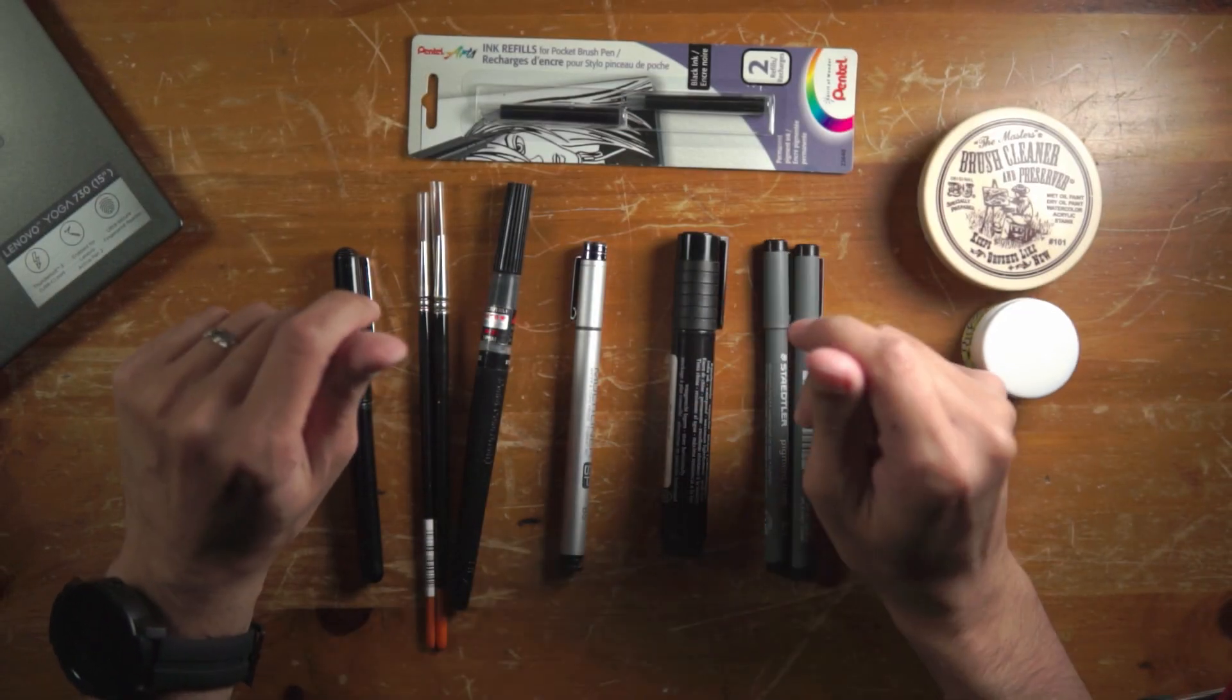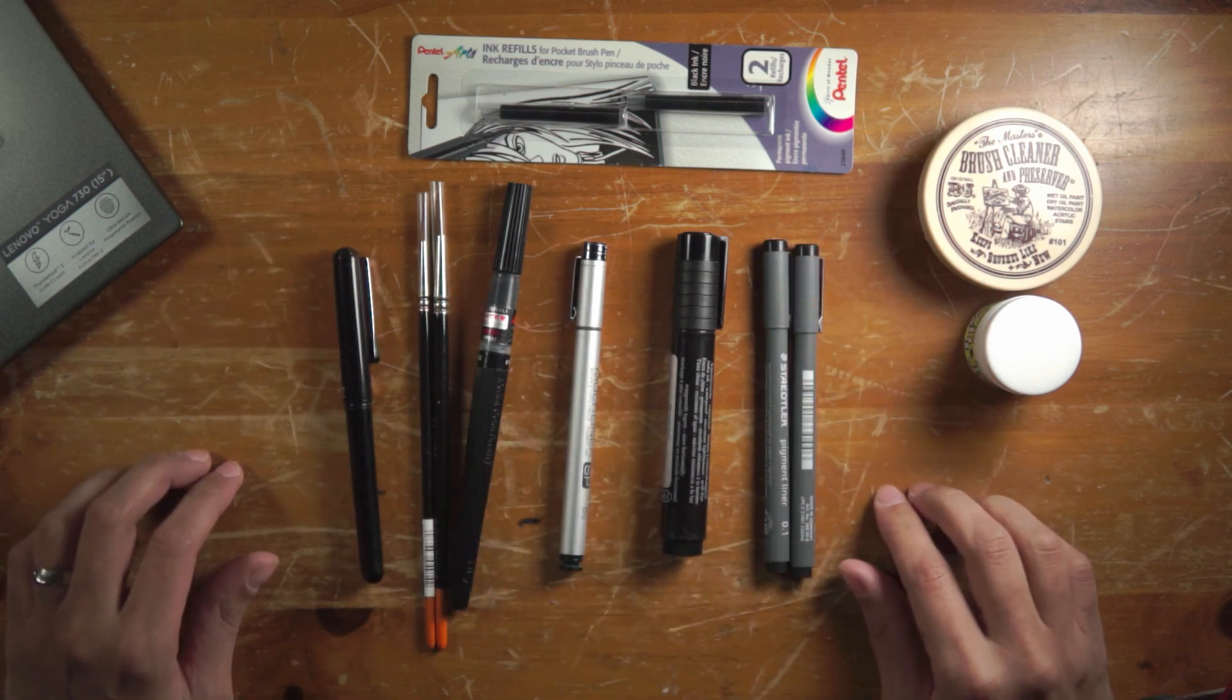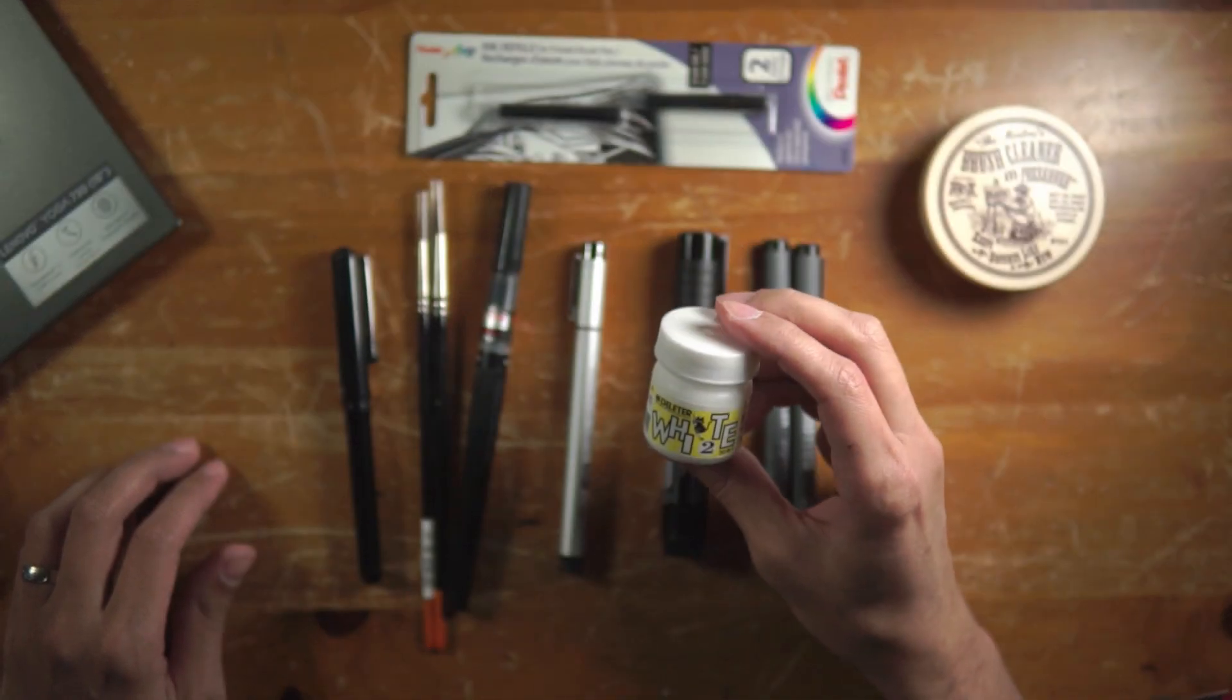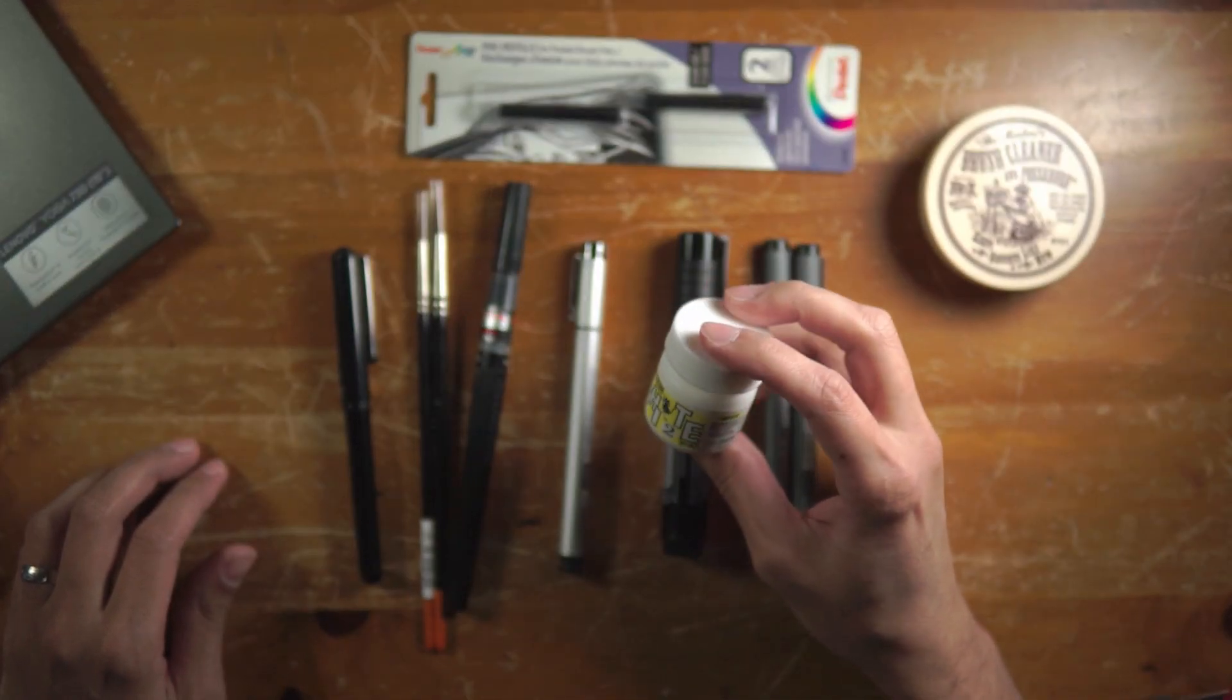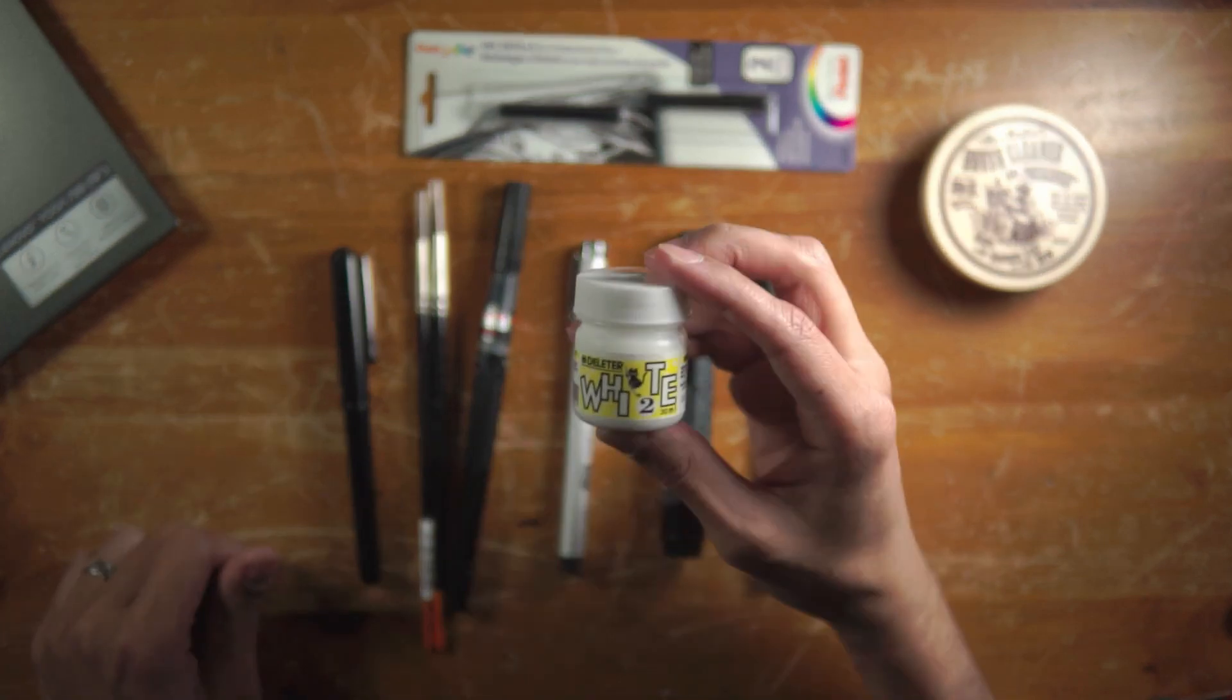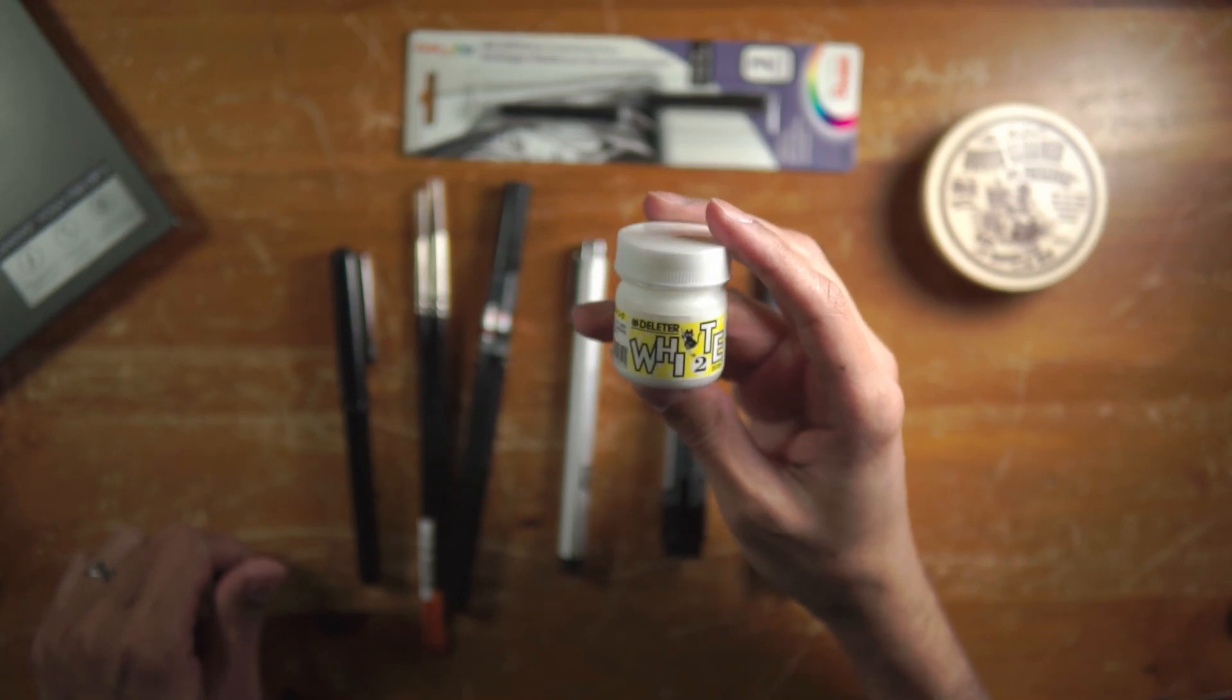All right, let's talk about correction. Sometimes you make mistakes when you're inking traditionally and you want to be able to correct your work. For that, I use the Deleter White number two. This is the 30 millimeter bottle, and this is really good, highly recommended white paint. It's very white, it's very opaque.